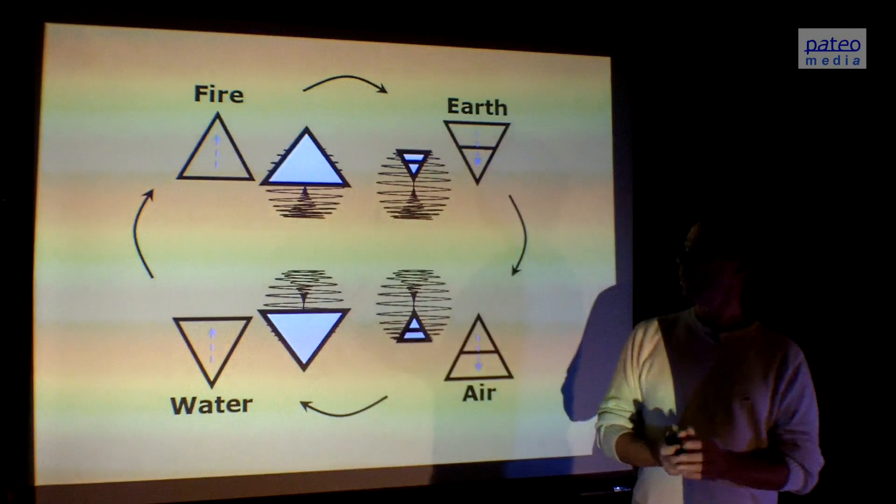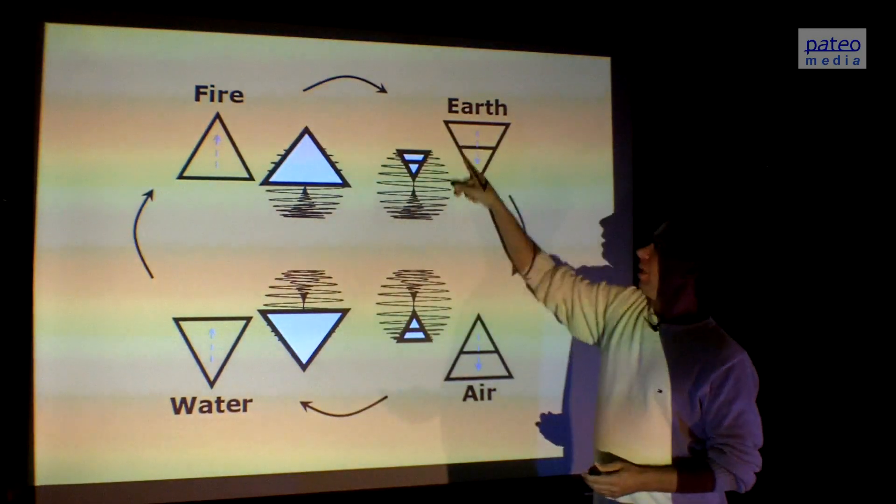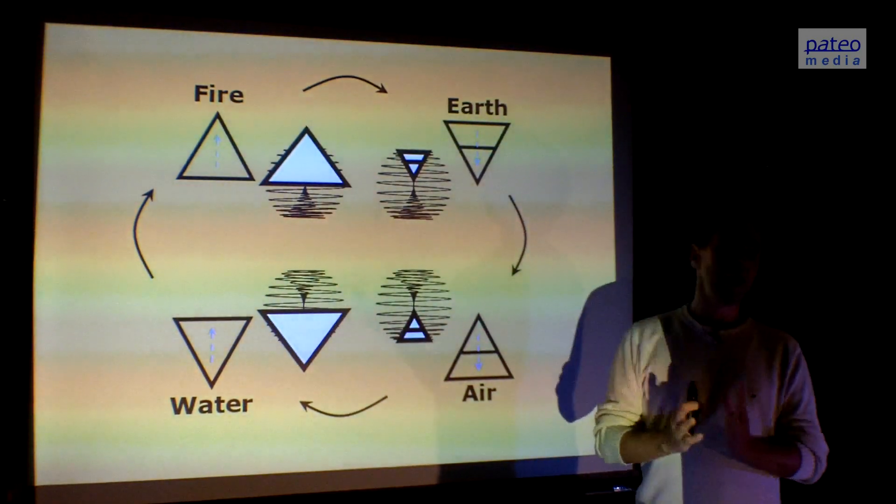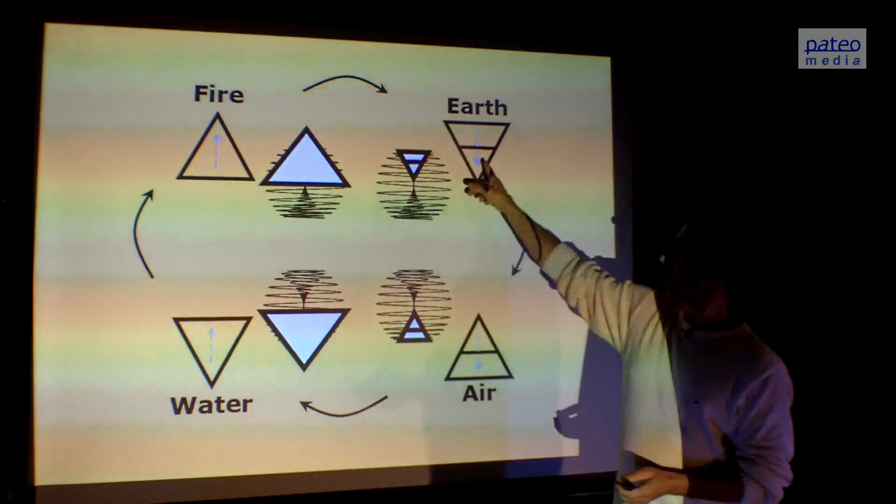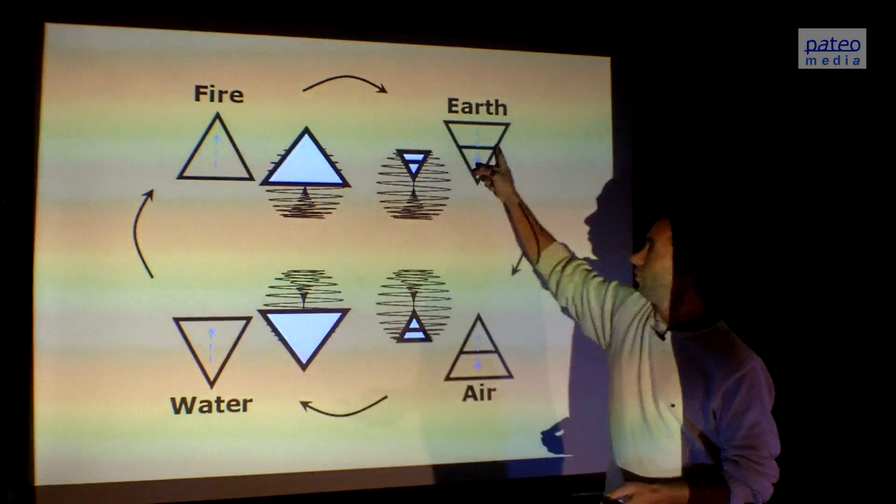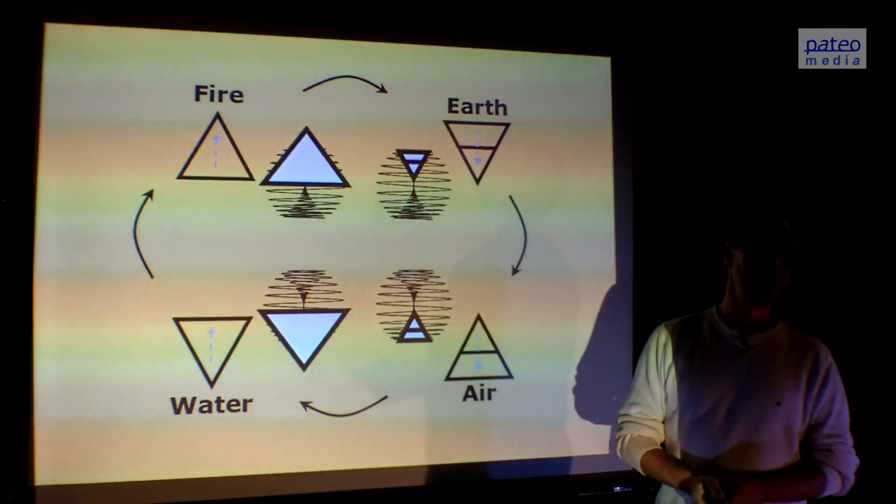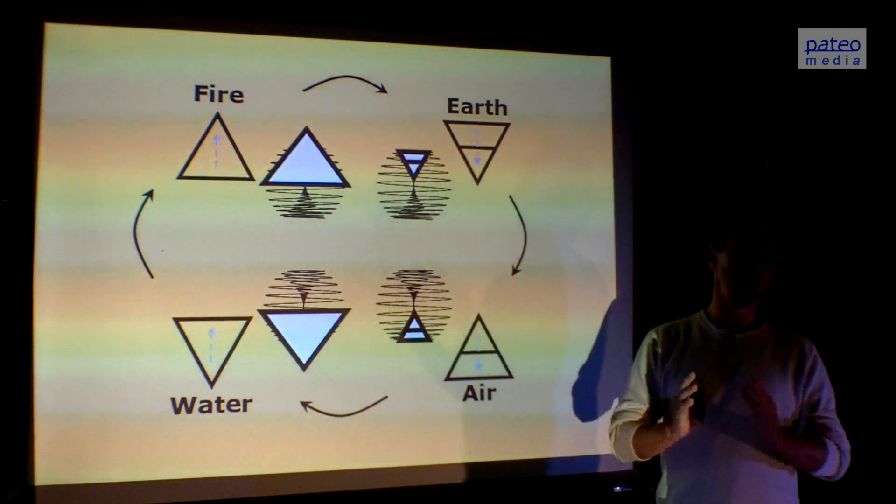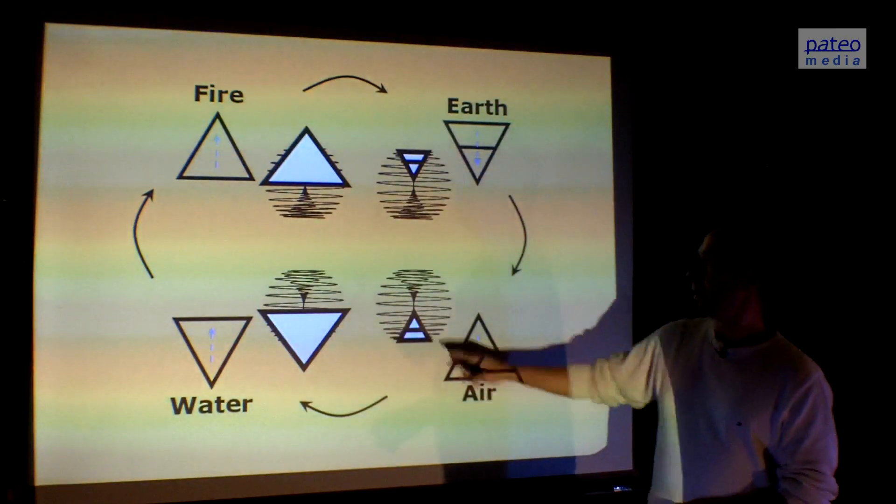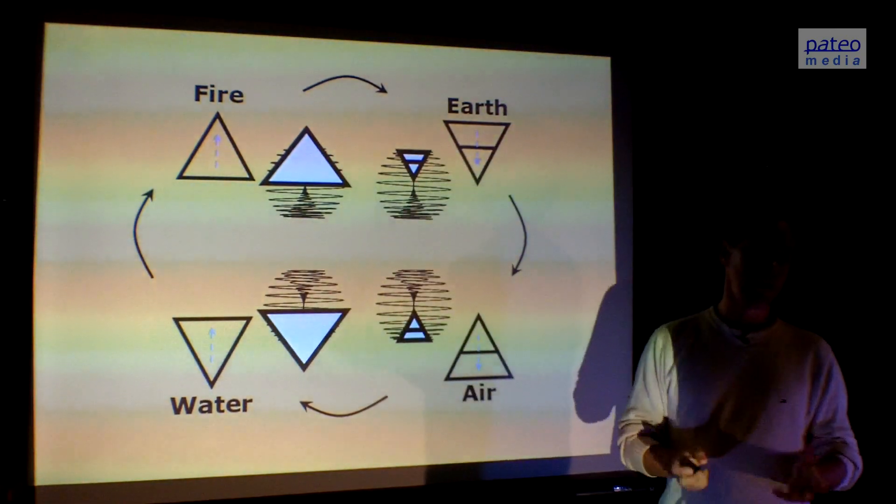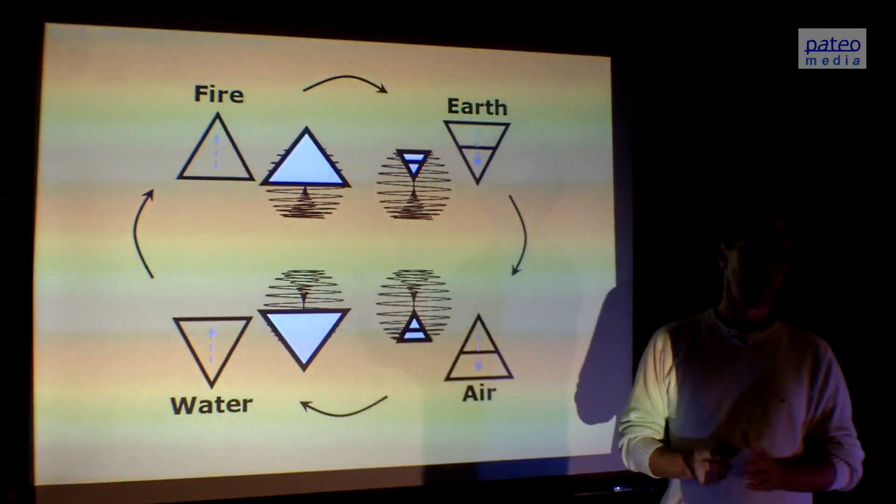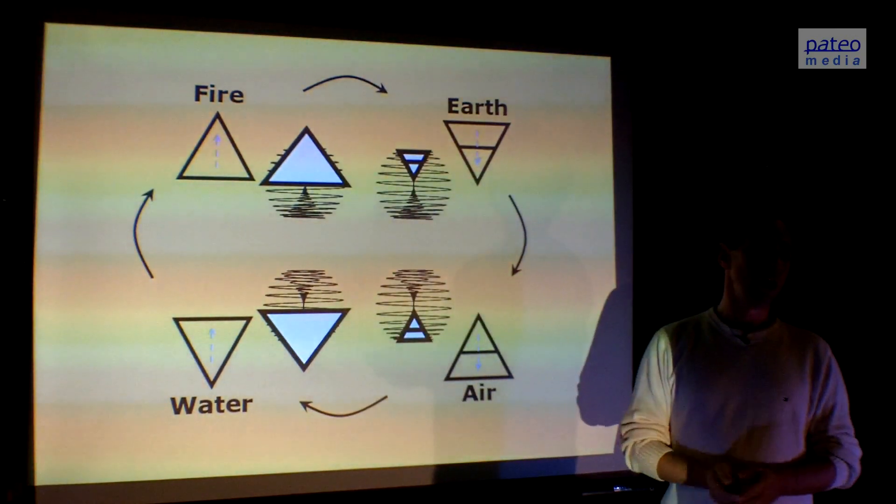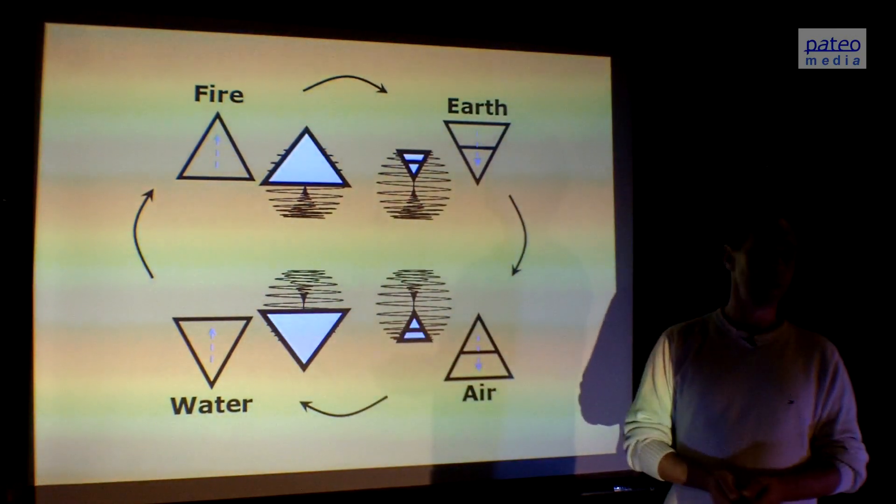You see two kinds of movements. Movements where the triangle is pointed down are yin energies, female energies. Here the points are up, the triangle is pointed up, outwards. Air and fire are yang, are male energies. These four phases of energy are visible in the forbidden apple of knowledge.